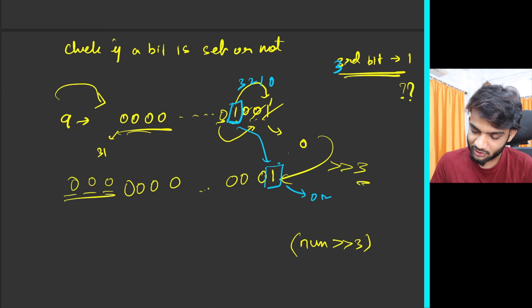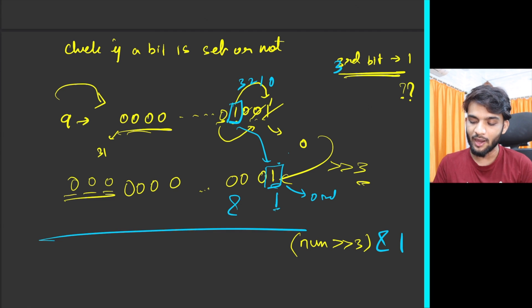Whenever you're doing a right shift of three, whichever bit, this was the third bit, so the third bit comes over right at the zeroth index. Now what you do is you do an AND with one. If you do an AND with one, this automatically boils down to one and one.